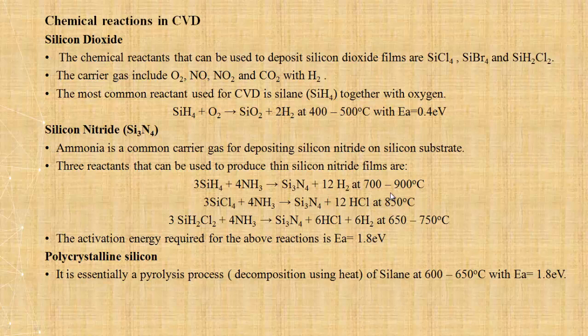Next is polycrystalline silicon. Polycrystalline silicon deposition uses silane heated at 600-650°C. It is essentially a pyrolysis process - decomposition using heat of silane. The activation energy is 1.8 eV.